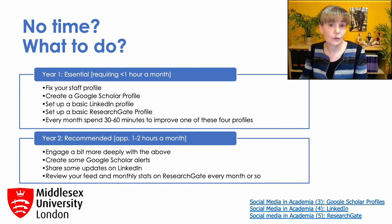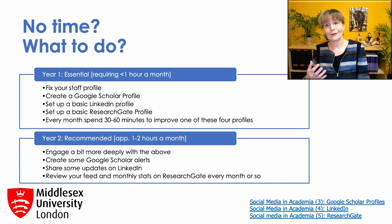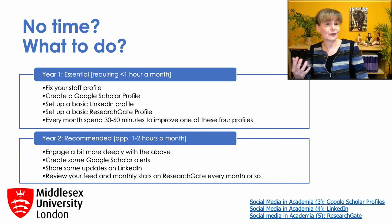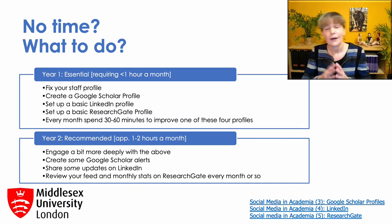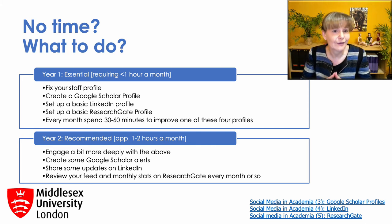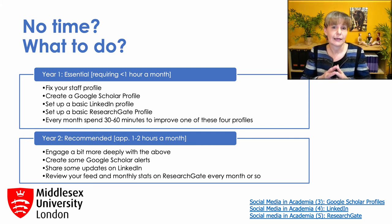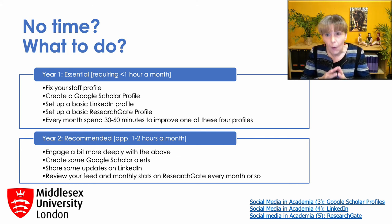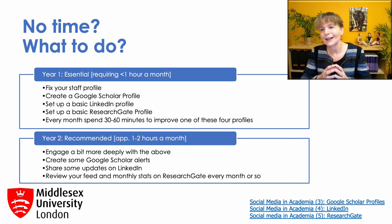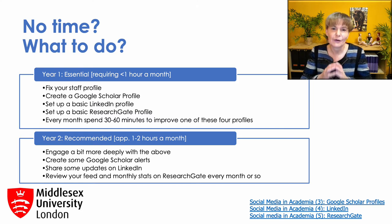For ResearchGate, you would obviously want to upload every new paper, but you could also have a look at your feed, which shows you who has published new work in your area and who has been reading and citing your work. Or you could have a look at your monthly statistics — ResearchGate shows you how often your papers are viewed or cited and how this is developing over time. I wouldn't really encourage you to get too focused on this, but it's nice to look at occasionally. My blog post about ResearchGate provides lots more detail on how you can use this platform effectively.